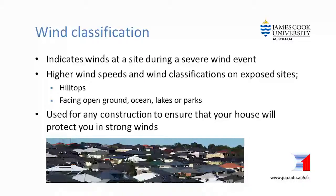In summary, the wind classification indicates the winds that could be expected at a particular building site during an extreme wind event. Houses on open or exposed sites such as on the tops of hills or facing lakes, oceans or parks will experience higher wind speeds. Therefore, they will have higher wind classifications than houses in sheltered locations. Once you know the wind classification, you can use it for renovation work or to specify any sheds, roof patios or fences you may need in the future. The wind classification is an important part of designing and building your house to protect you and your family during severe wind events.